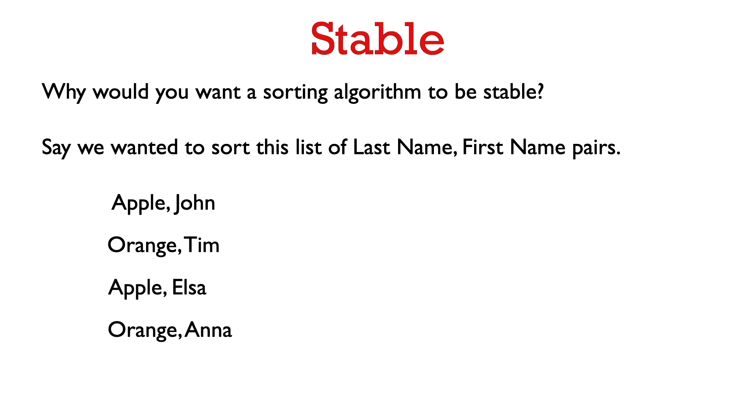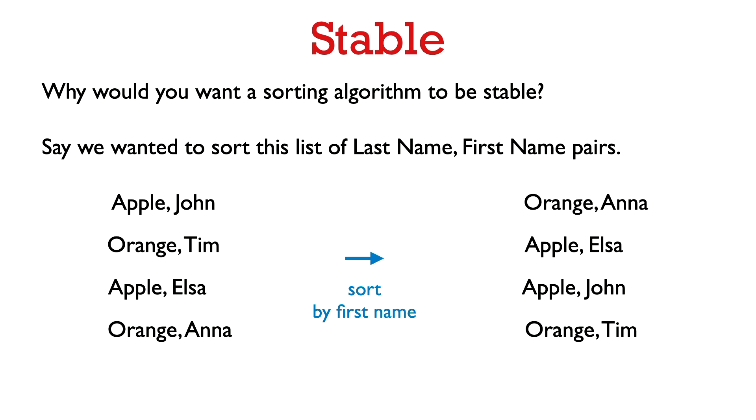Let's say that we wanted to sort this list of last name, first name pairs. We have: Apple, John; Orange, Tim; Apple, Elsa; and Orange, Anna. Let's go ahead and sort that by first name. So now Anna comes first, then Elsa, then John, then Tim. We've sorted by first name.